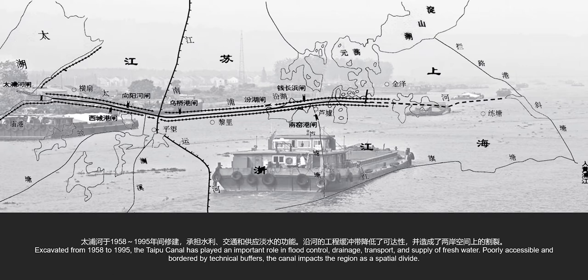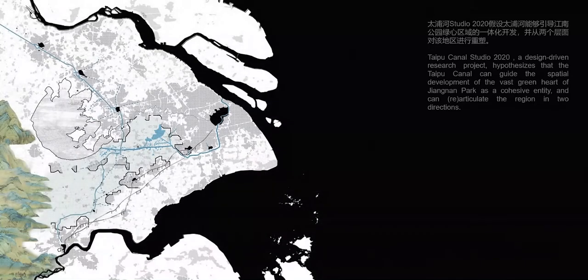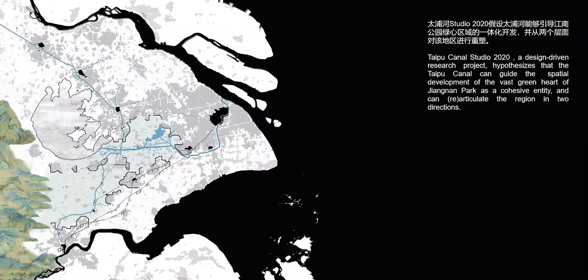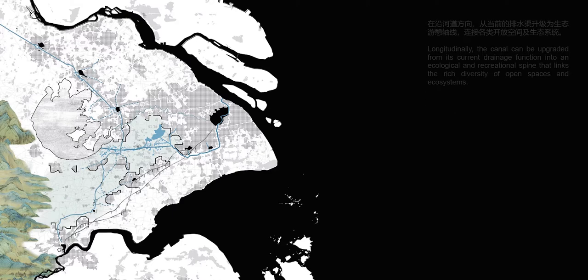Poorly accessible and bordered by technical buffers, the canal impacts the region as a spatial divide. Taipu Canal Studio 2020, a design-driven research project, hypothesized that the Taipu Canal can guide the spatial development of the vast green heart of Jiangnan Park as a cohesive entity and can re-articulate the region in two directions.